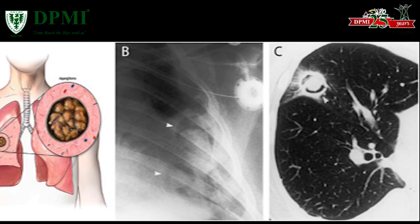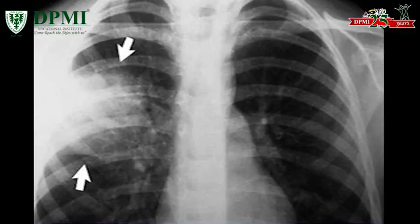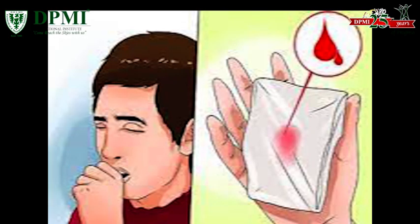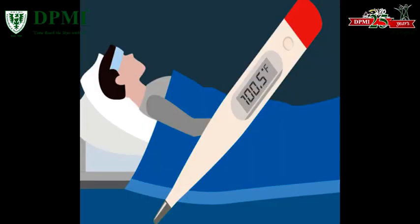Symptoms of Allergic Pulmonary Aspergillosis may include cough, coughing up blood or brownish mucous plugs, fever, malaise, and wheezing.